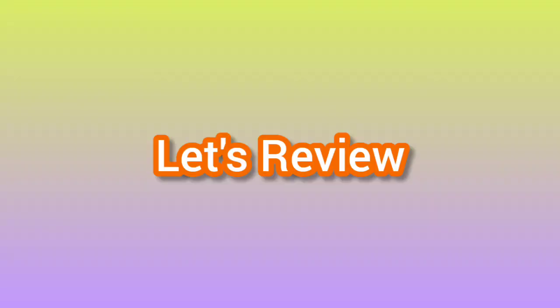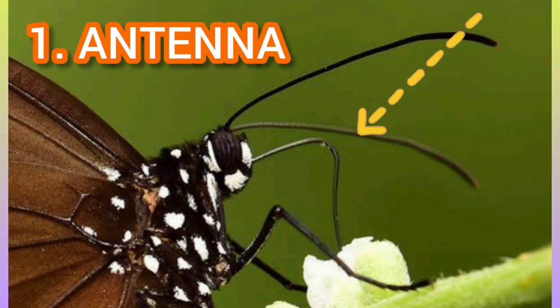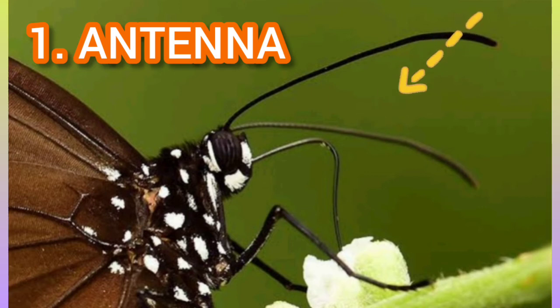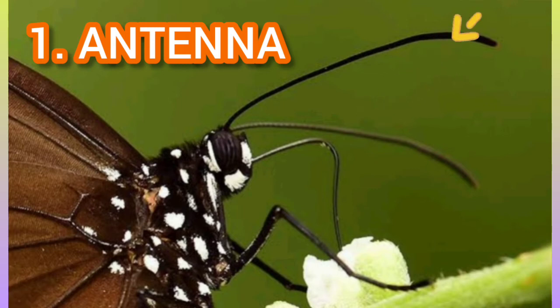Let's review the butterfly body parts. This is the butterfly antenna — the two long tubes at the top of the butterfly's head. Let's spell antenna: A-N-T-E-N-N-A. Antenna.